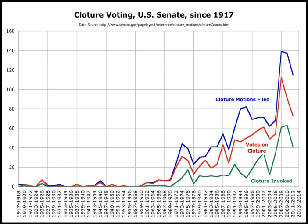Hence, tedious delays, continual negotiation and intrigue, contemptible compromises of the public good. And yet, in such a system, it is even happy when such compromises can take place, for upon some occasions things will not admit of accommodation, and then the measures of government must be injuriously suspended, or fatally defeated. It is often, by the impracticability of obtaining the concurrence of the necessary number of votes, kept in a state of inaction. Its situation must always savor of weakness, sometimes border upon anarchy.